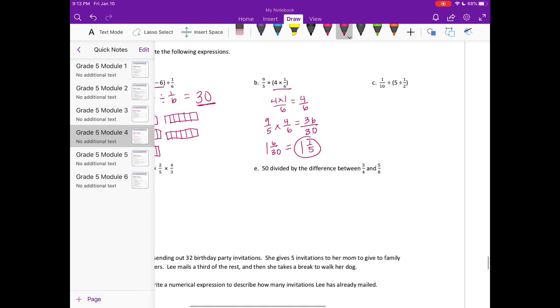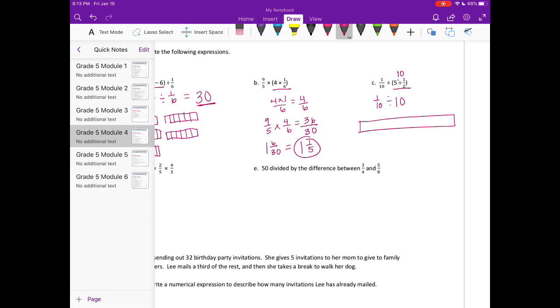And C, 1 tenth divided by 5 divided by 1 half. So if we start with what's in the parentheses, 5 divided by 1 half. If I drew 5 tape diagrams and split them into 1 half, I would have 10. So we have 1 tenth divided by 10. If I were to draw a tape diagram, and we have this 1 tenth, and we're going to split that into 10 equal pieces. So if I did that, each tiny little piece, I can't even fit them all in there. Each tiny little piece would be equal to 1 one-hundredth.